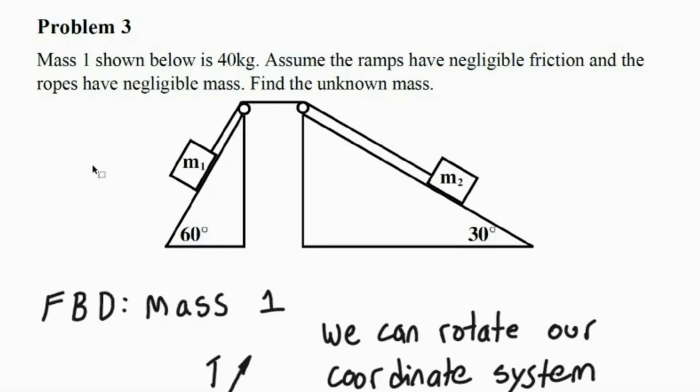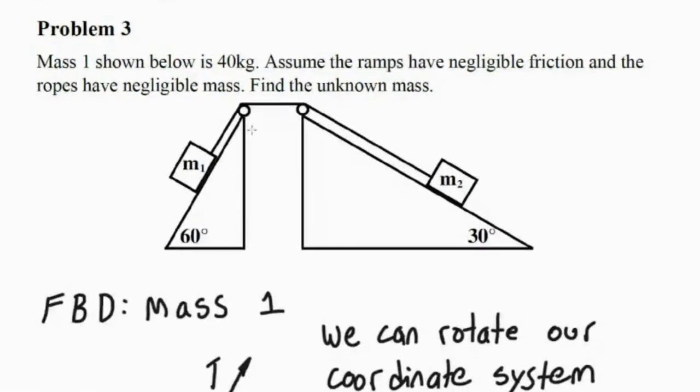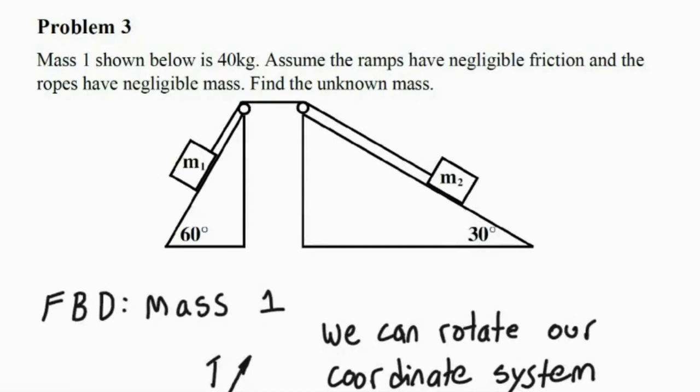And then the other thing to keep in mind is that once we figure out what the tension is in this rope, then we know that the tension in that rope has to be constant. So we'll start with mass 1, use the information they gave us about the 40 kilograms to figure out our tension. And then once we have that tension, we can do a free body diagram for mass number 2.